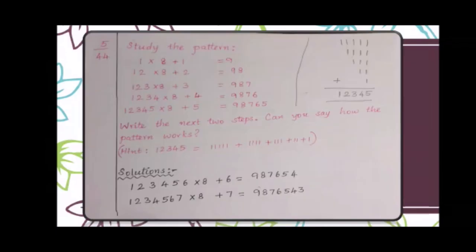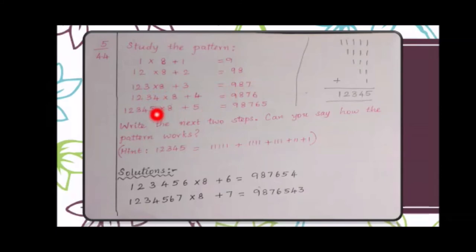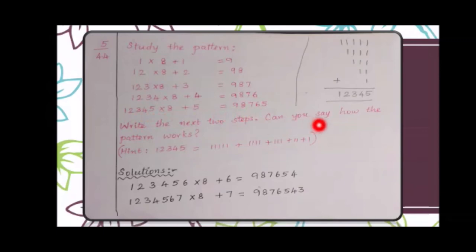Problem number 5: Study the pattern — 1×8+1=9; 12×8+2=98; 123×8+3=987; 1234×8+4=9876; 12345×8+5=98765. Write the next 2 steps and say how the pattern works.